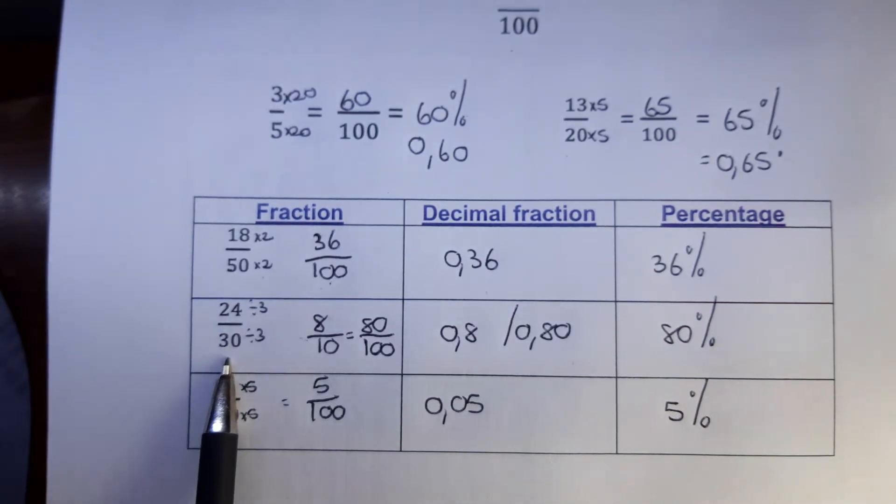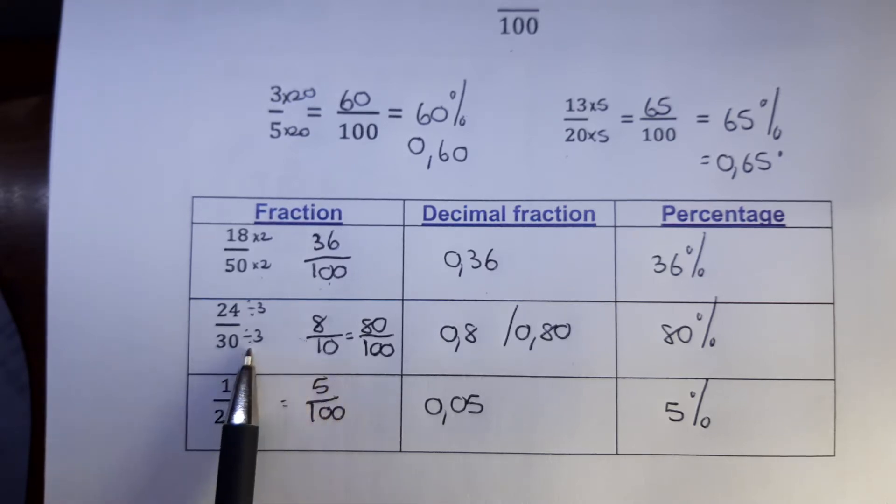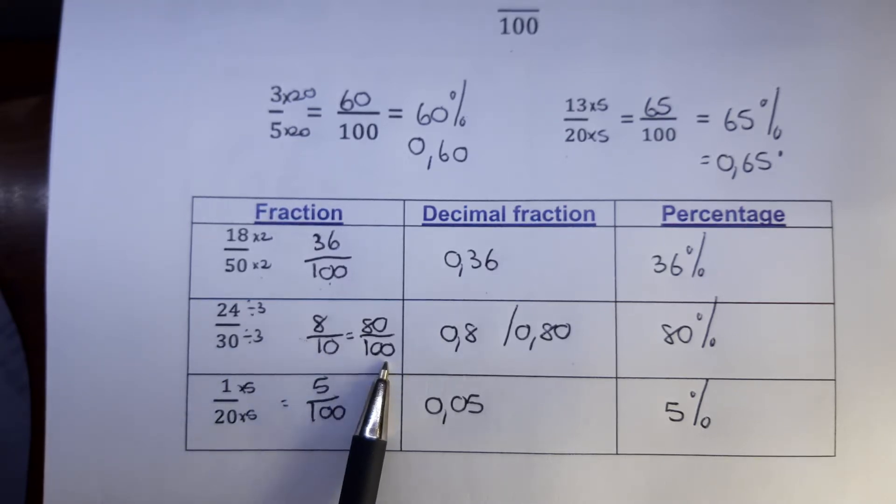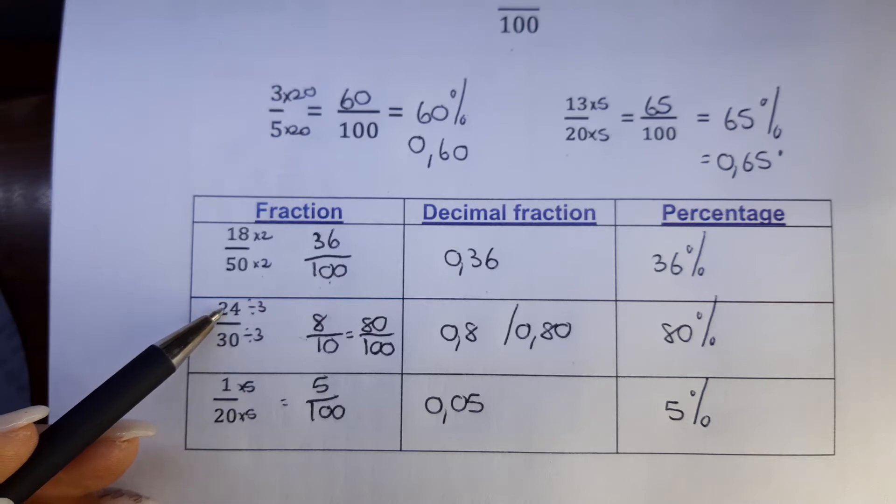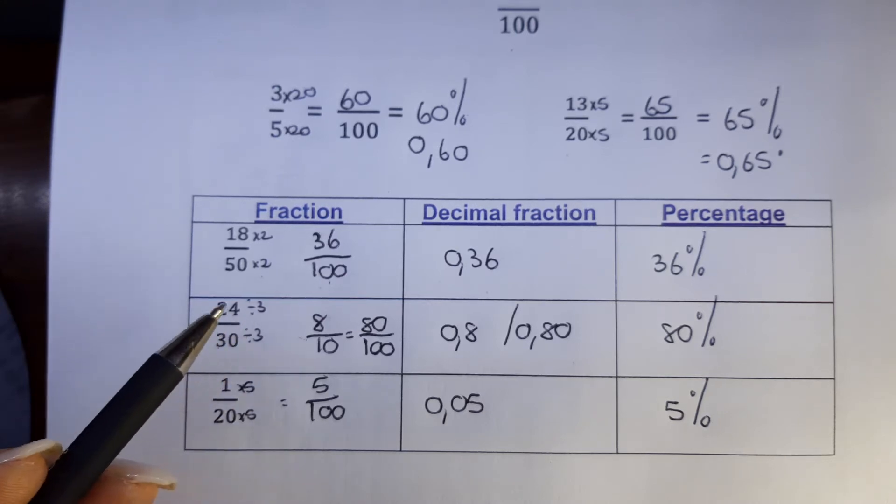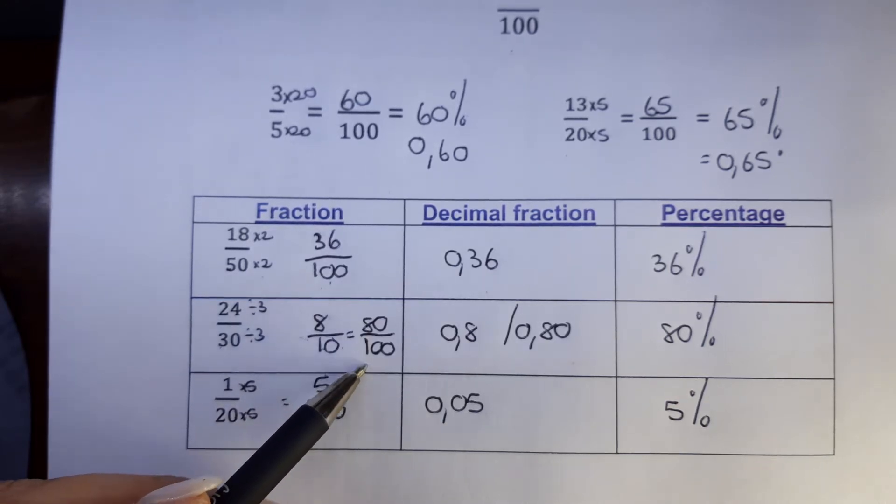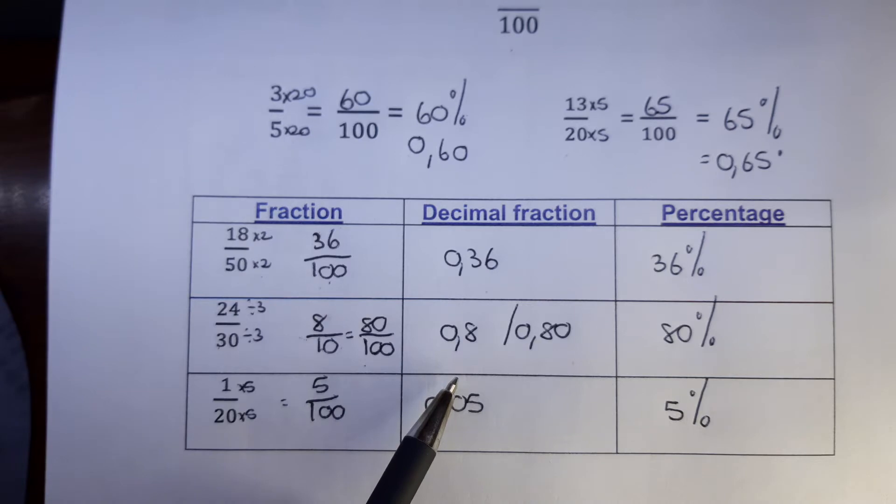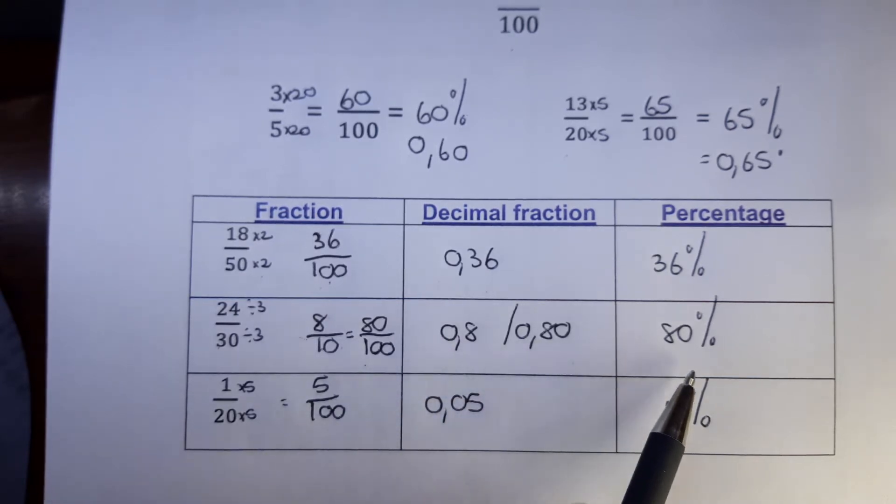24 out of 30. You cannot change the 30 or convert the 30 straight to a hundred. You can first convert it to a 10 and then something else that you can then convert to a hundred. Or what you also can do is, for example, five eighths, you can divide the 5 by 8 to convert it that way. So this one I said it's 8 out of 10 and that equals to 80 hundredths, and decimal fraction is 0.8 or 0.80. That's 80%.